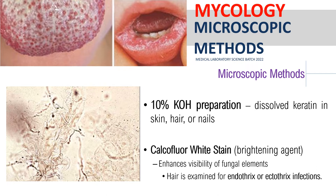The KOH preparation, when positive, provides valuable clues as to the etiologic agent of infection. The basic principle of KOH is that it acts to disrupt cellular sheets or clumps of proteinaceous debris that may be present, and clears the specimen for easier fungal detection.